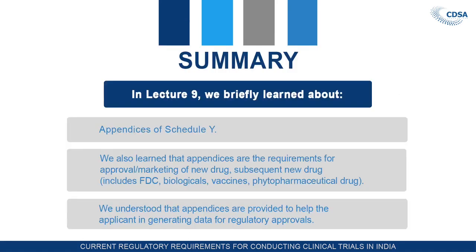Let us briefly summarize lecture 9. In this lecture we have seen all appendices from appendix 1 to appendix 12, including 1A and 1B. We also learned that the appendices cover requirements for approval of marketing new drugs, subsequent new drugs, FDC, biologicals, vaccines, and phytopharmaceutical drugs.